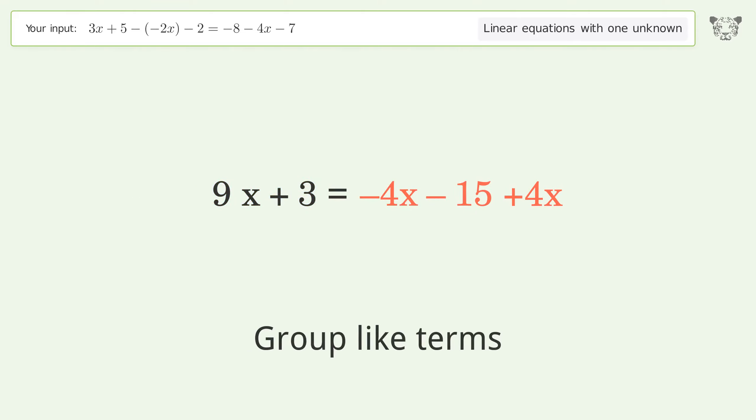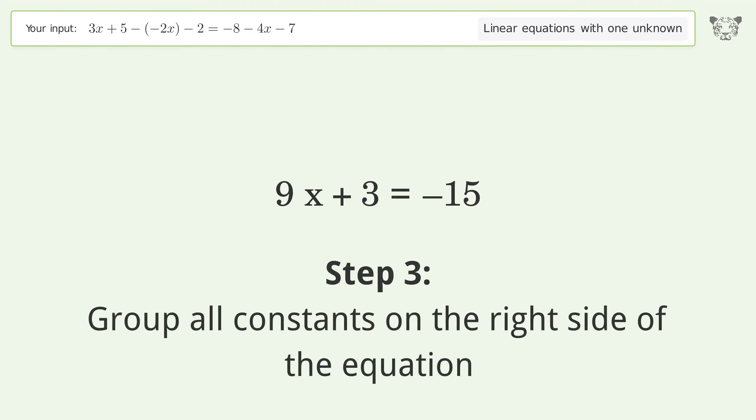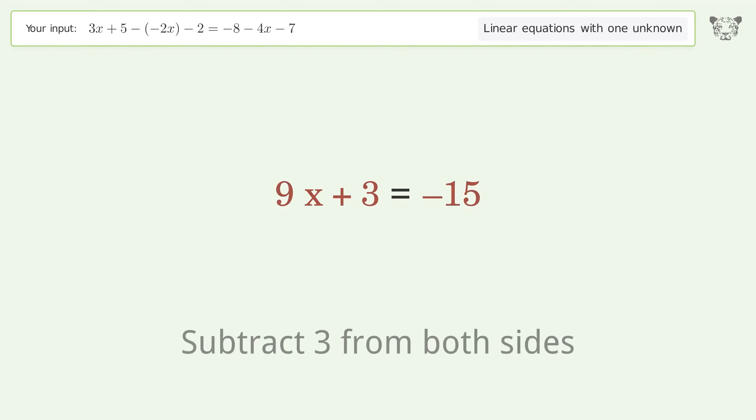Group like terms. Simplify the arithmetic. Group all constants on the right side of the equation. Subtract 3 from both sides. Simplify the arithmetic.